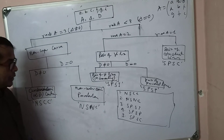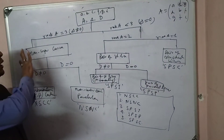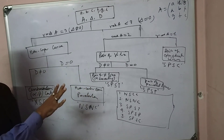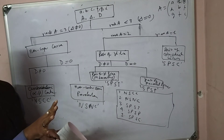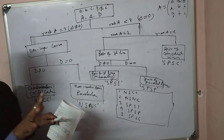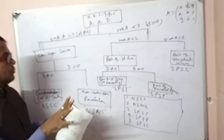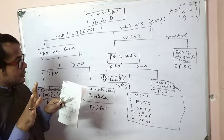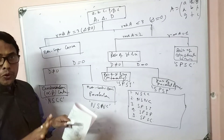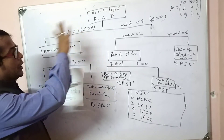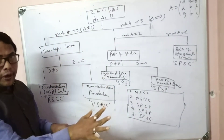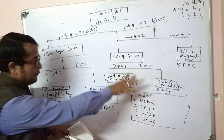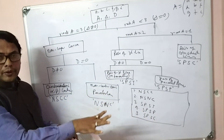In the next video, we will discuss how to obtain the canonical form under these five categories. I hope you enjoyed this video and now have a clear idea about the classification of the general equation of second degree in two dimensions. Please subscribe to my channel and share this video with your friends. Thank you very much.